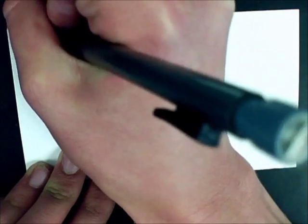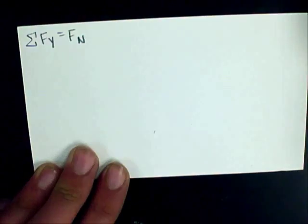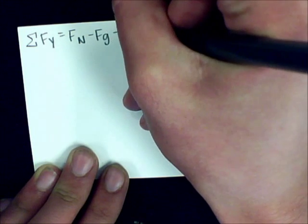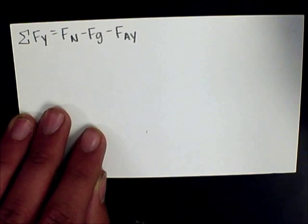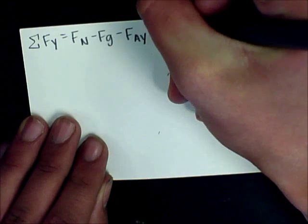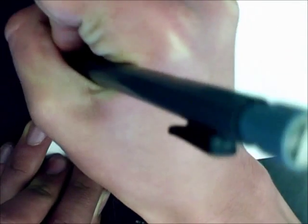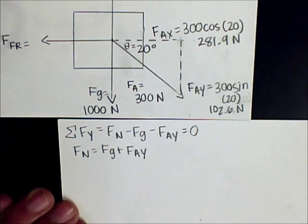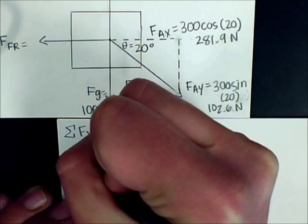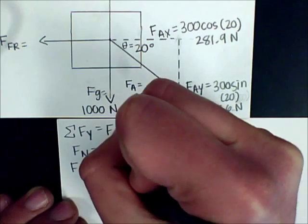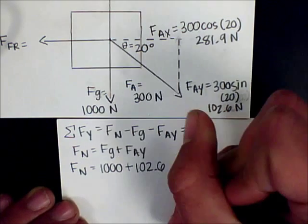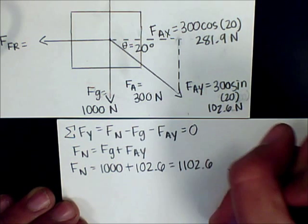To find the normal force, we have to take into consideration all the forces in the y direction. The normal force is moving upwards, so it's positive. The force of gravity is moving downwards, so it's negative. And the force applied in the y direction is also moving downwards since it is a push. So the normal force equals the force of gravity plus the force applied in the y direction — 1,000 plus 102.6 — yielding a normal force of 1,102.6 newtons.